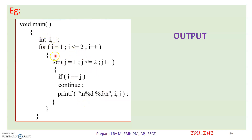If i is equal to j, for i equal to 1 — the value is 1, 1 less than or equal to 2, that is correct. We save j equal to 1. If i equals j, the value is the same. Since 1 equals 1, continue is executed. When continue executes, the remaining statements are skipped and control goes back to the beginning of the inner loop.